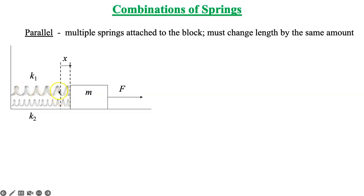And because they're both connected here, both these springs have to change length by the same amount. In fact, that's one way to know that we're looking at a parallel combination of springs. It doesn't have to look exactly like this, but as long as the two or three or whatever springs change by the same length, they're in a parallel combination.